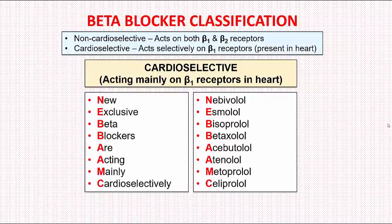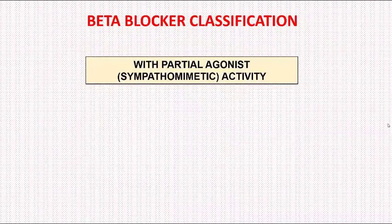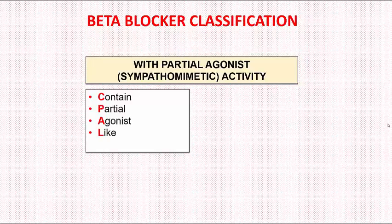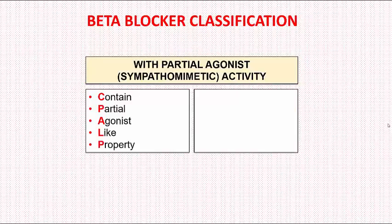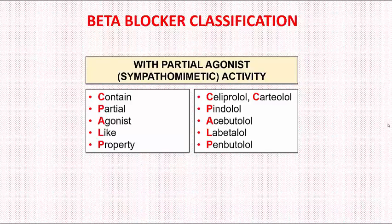Now we move on to the beta blockers having partial agonistic or sympathomimetic activity. The mnemonic is: 'Contain Partial Agonist Like Property' — where C stands for celiprolol and carteolol, P stands for pindolol, A stands for acebutolol, L stands for labetalol, and P stands for penbutolol.